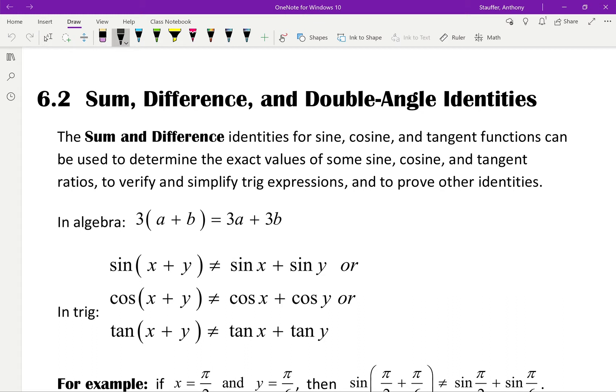The sum and difference identities for sine, cosine, and tangent can be used to determine the exact values of sum, sine, cosine, and tangent ratios.